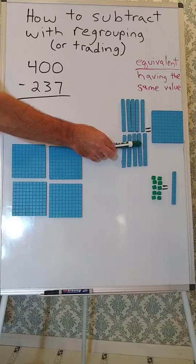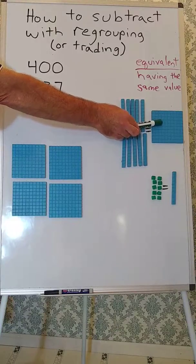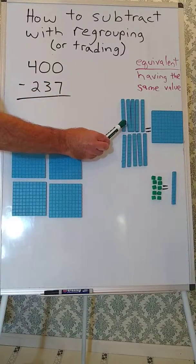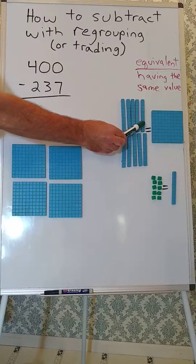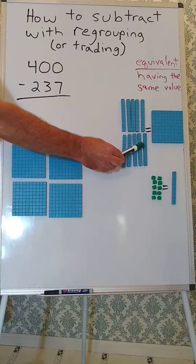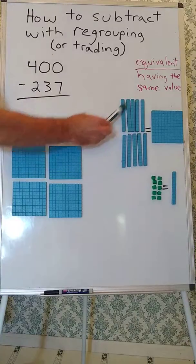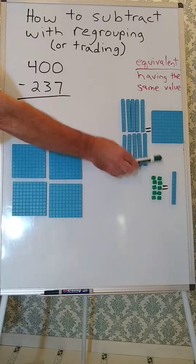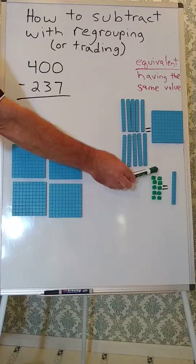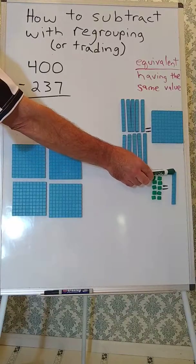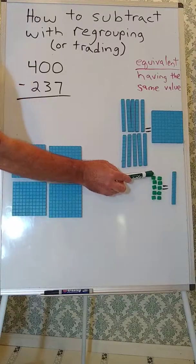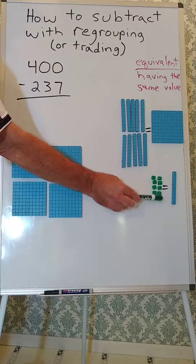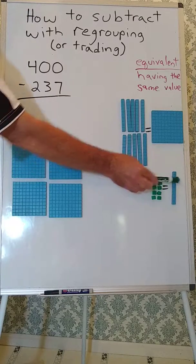These 10 tens are equivalent to 100 because they have the same value: 10, 20, 30, 40, 50, 60, 70, 80, 90, 100. These 10 tens have the same value as this 100. And similarly here, these 10 ones have the same value as this 10. So we see 5 and 5 make 10. These are equivalent.